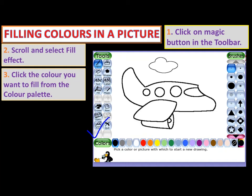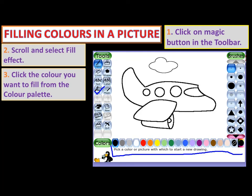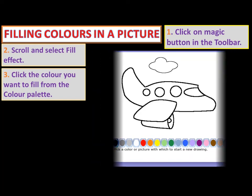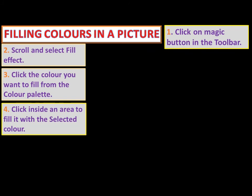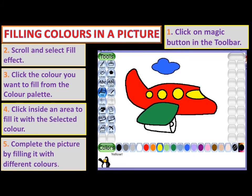Click on the Magic button in the toolbar — this is the toolbar and this is the Magic button. After that, scroll and select the Fill Effect tool — this is the Fill Effect tool. Now click the color you want from the color palette, then click inside an area to fill it with the selected color.